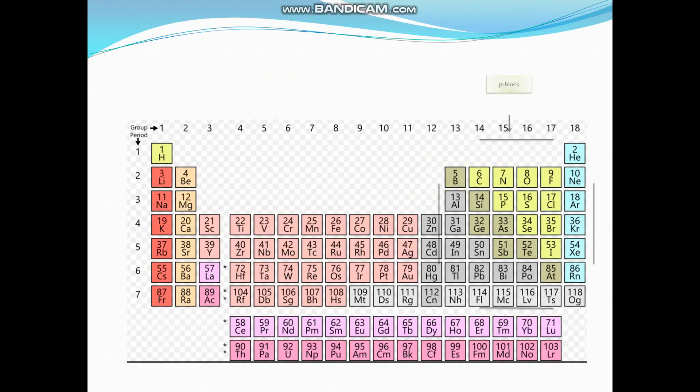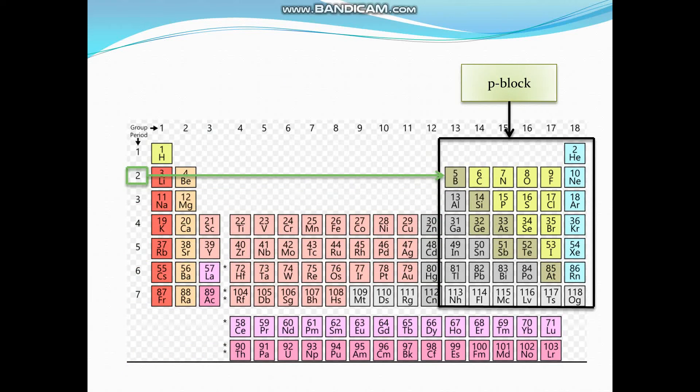That is now we have to look into p block of the periodic table, second period from the top and fourth element from the left end. P block, second period, fourth element from the left end which gives us oxygen with atomic number 8.